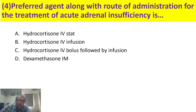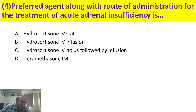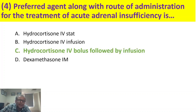Preferred agent along with route of administration for the treatment of acute adrenal insufficiency. You have to select the agent as well as the route. The agents preferred are hydrocortisone and dexamethasone. The preferred route is IV bolus because it is an acute crisis — an initial bolus should be given followed by intravenous infusion. So the answer is C.